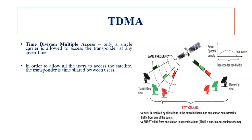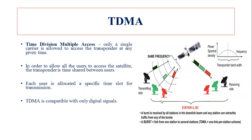The transponder is time-shared between users so that all people can utilize it. For example, earth station one is assigned a particular time slot, earth station two is assigned a second particular time slot, and so on — the time is shared between users. Each user is allocated a specific time slot. TDMA is compatible with digital signals only — this is the main point to note. The lack of intermodulation noise means increased efficiency in TDMA.